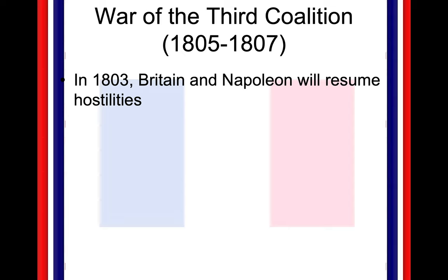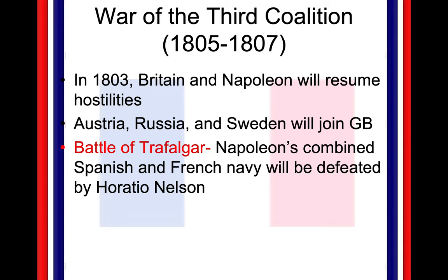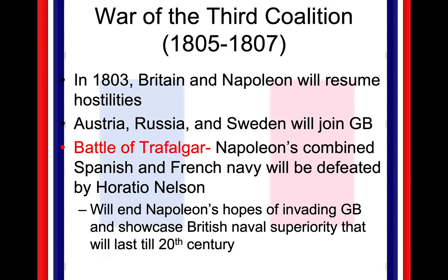We see this War of the Third Coalition. In 1803, Britain and Napoleon are going to resume their hostilities. Austria, Russia, and Sweden are all going to join Great Britain. A major battle we're going to be seeing is the Battle of Trafalgar — very important. Napoleon's navy is going to be defeated by the British. That's no coincidence: ever since the Spanish Armada, Great Britain rules the ocean. Napoleon was hoping to be able to invade Great Britain, but the British navy is going to defeat his navy. So very similar to Hitler in World War II, Napoleon will not be able to cross the English Channel. Great Britain is going to be safe because of the British navy.